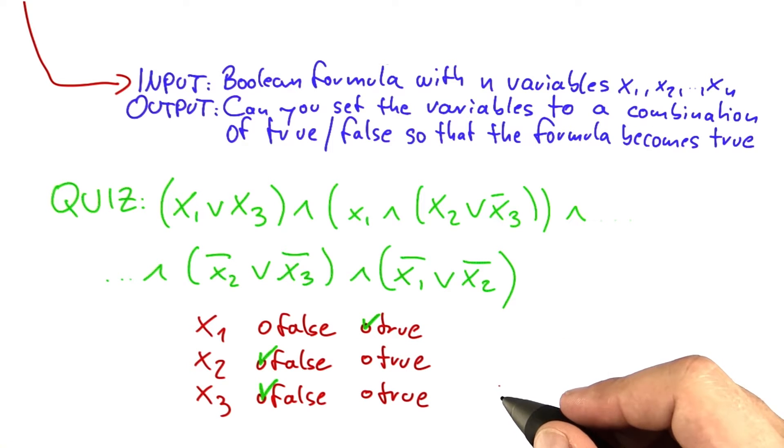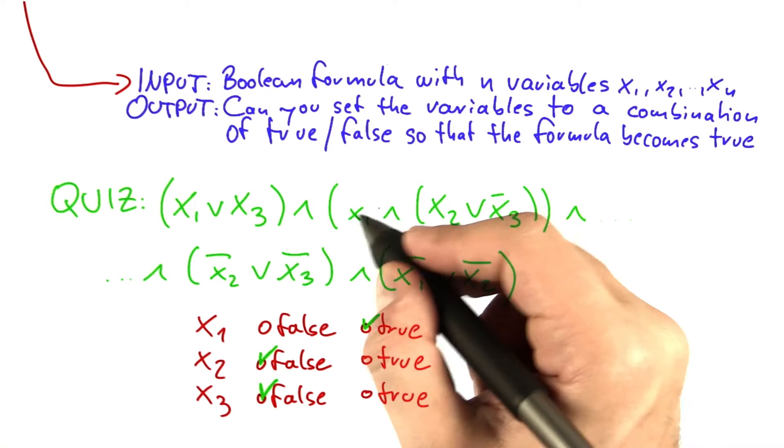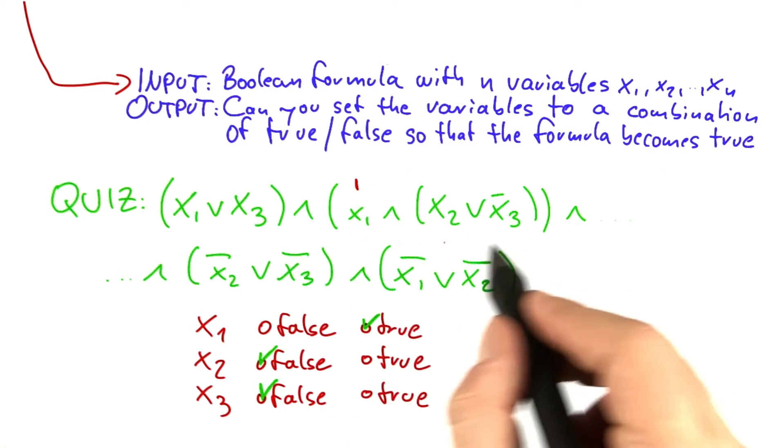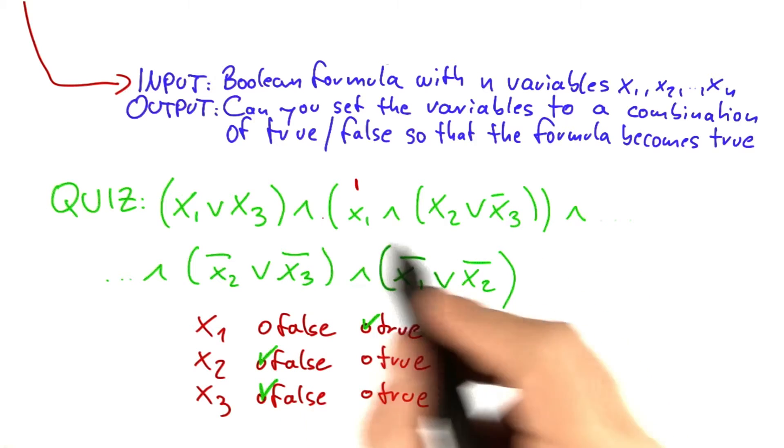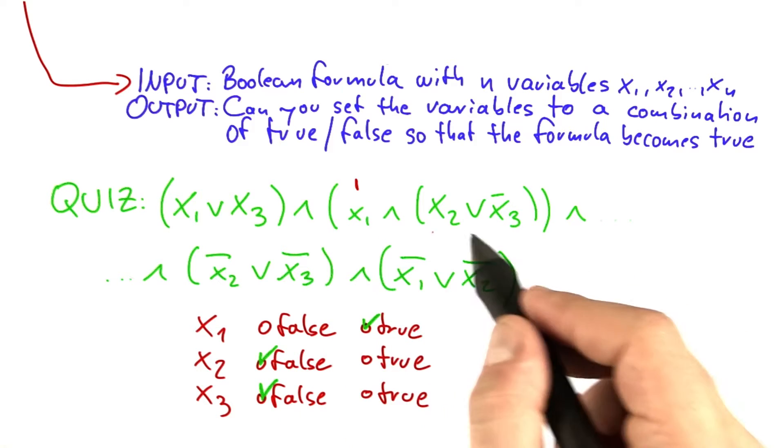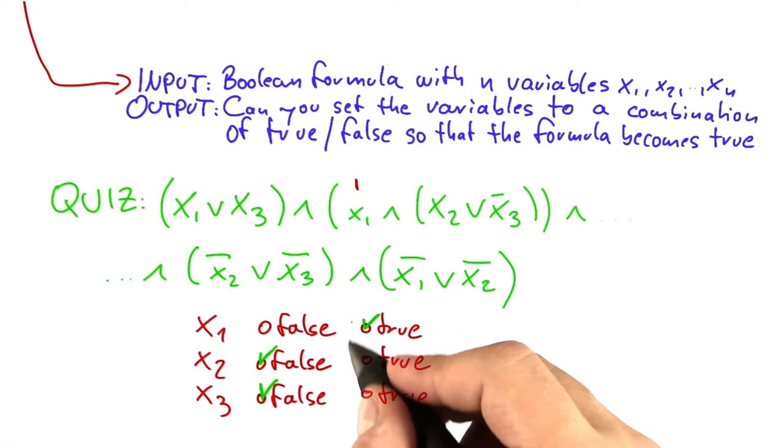And the way to figure this out is, at least for me, it was the following. So you have to set x1 to true, because otherwise this thing here will be false. And you see we have a number of ands, so if this evaluates to 0, the whole formula cannot be satisfied. So we already know this assignment here,